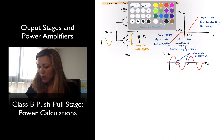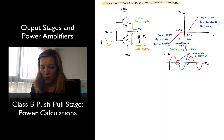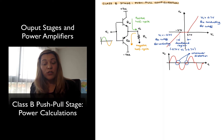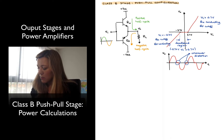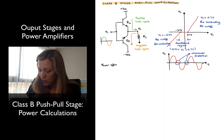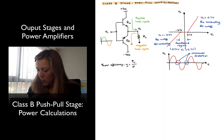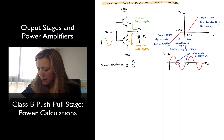In terms of the power calculations, we can calculate the power efficiency. Power efficiency is defined as the ratio of the average power delivered to the load divided by the average power provided by the supplies — power out divided by power in — times 100%. So power efficiency η equals power delivered to the load divided by power provided by the supplies, P_S, times 100%.